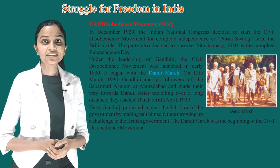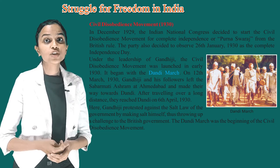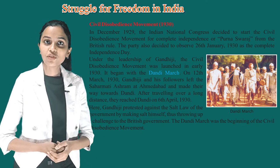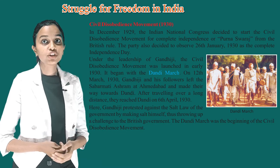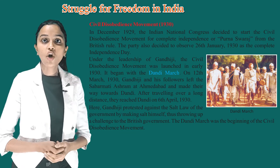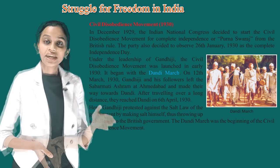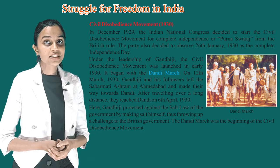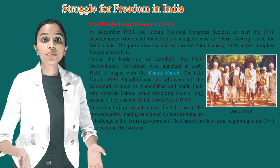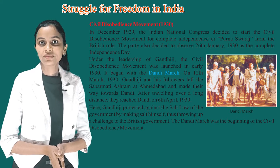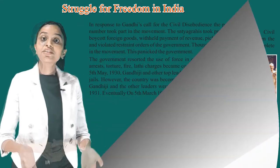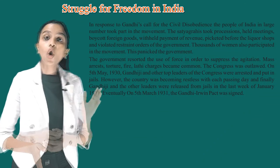On 12th March 1930, Gandhiji and his followers left the Sabarmati Ashram at Ahmedabad and made their way towards Dandi. After travelling a long distance, they reached Dandi on 6th April 1930. Here, Gandhiji protested against the salt law of the government by making salt himself, thus throwing up a challenge to the British government. The Dandi March was the beginning of the Civil Disobedience Movement.